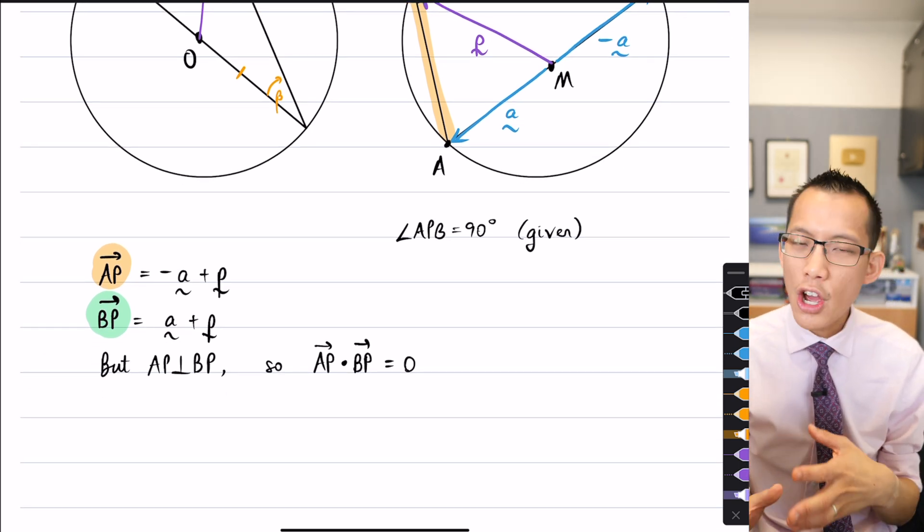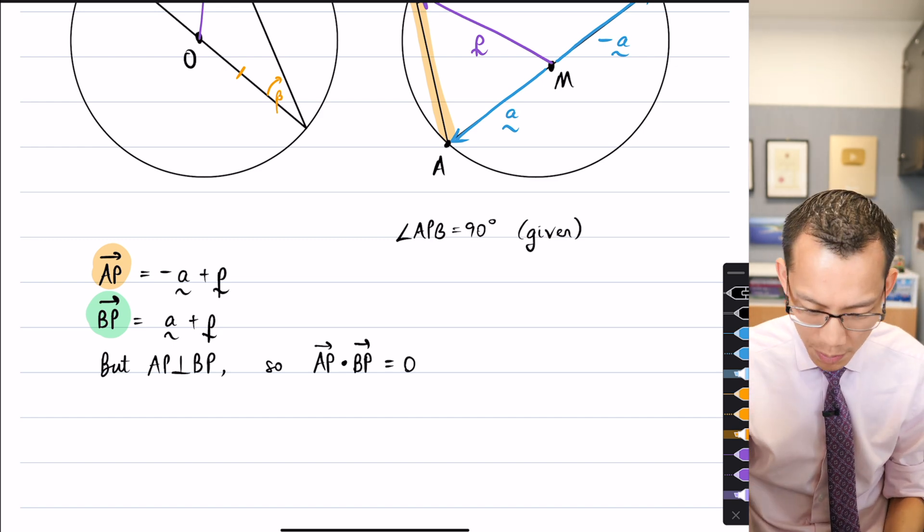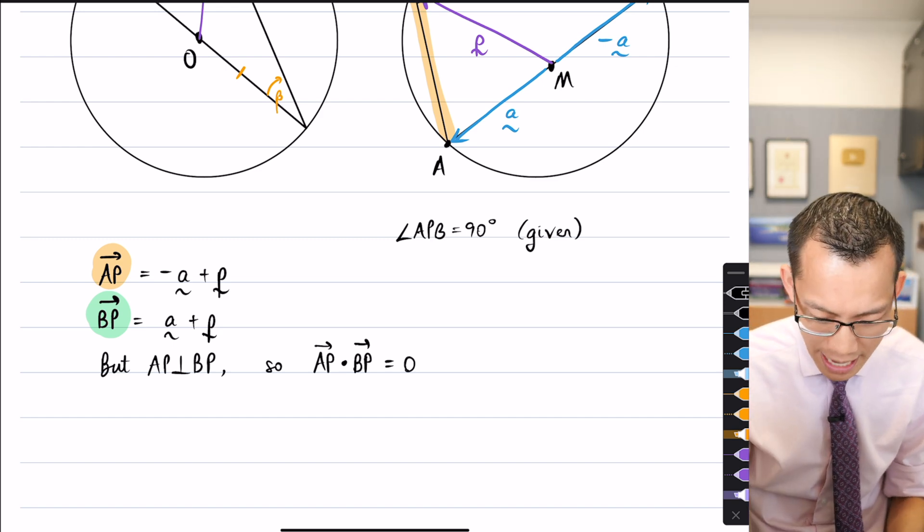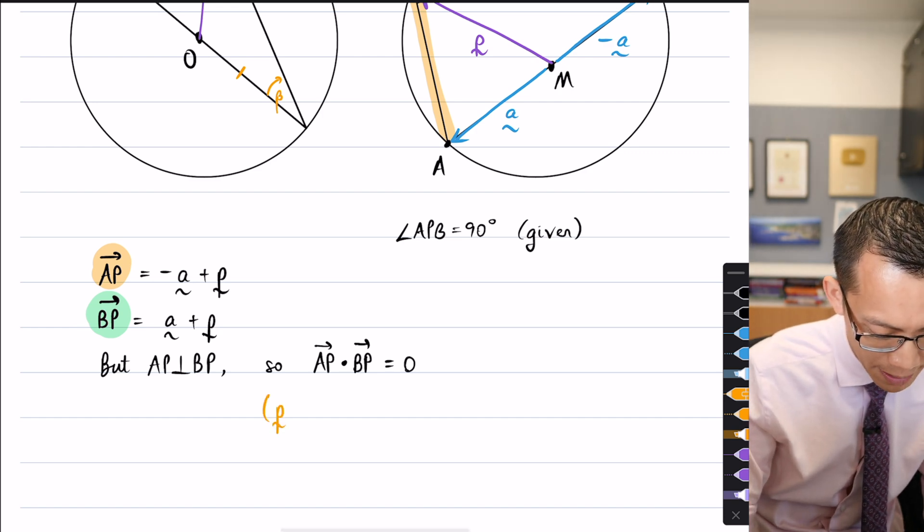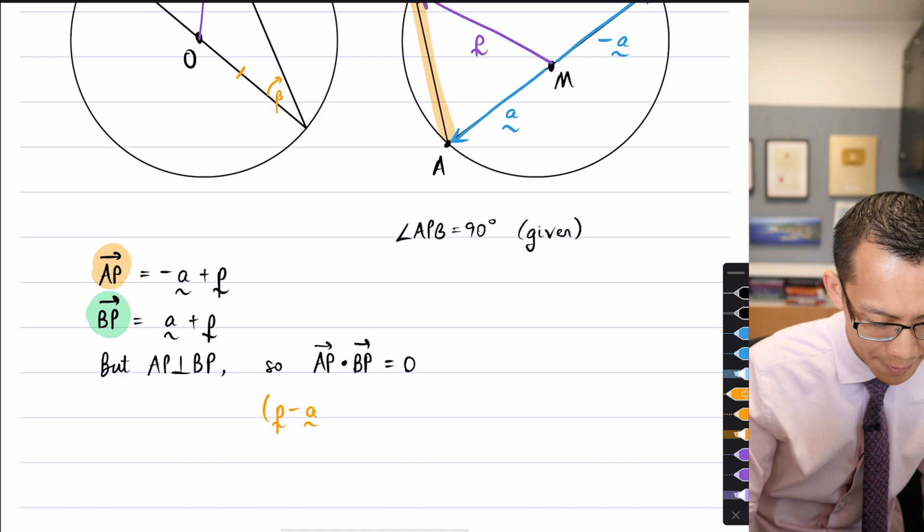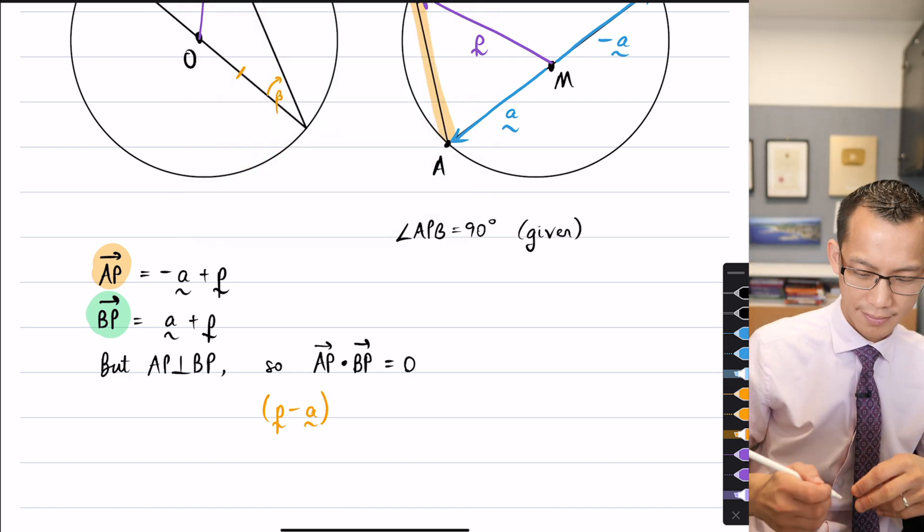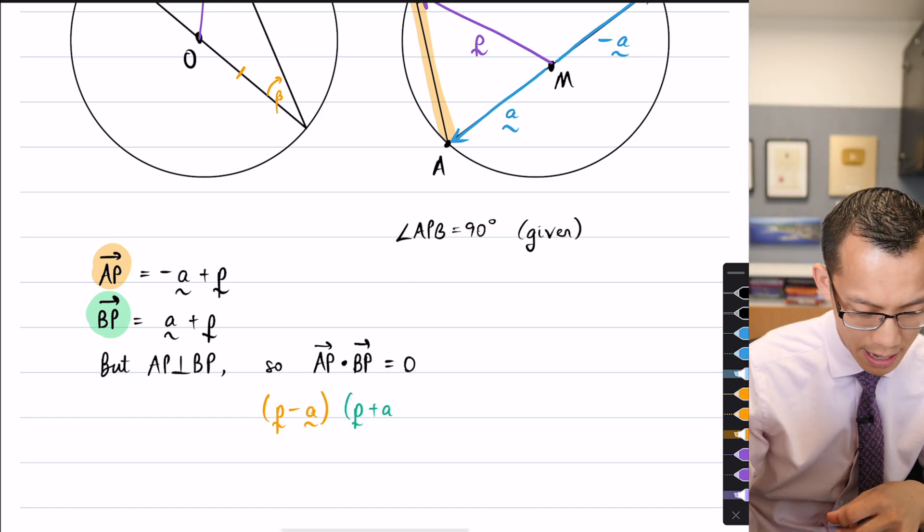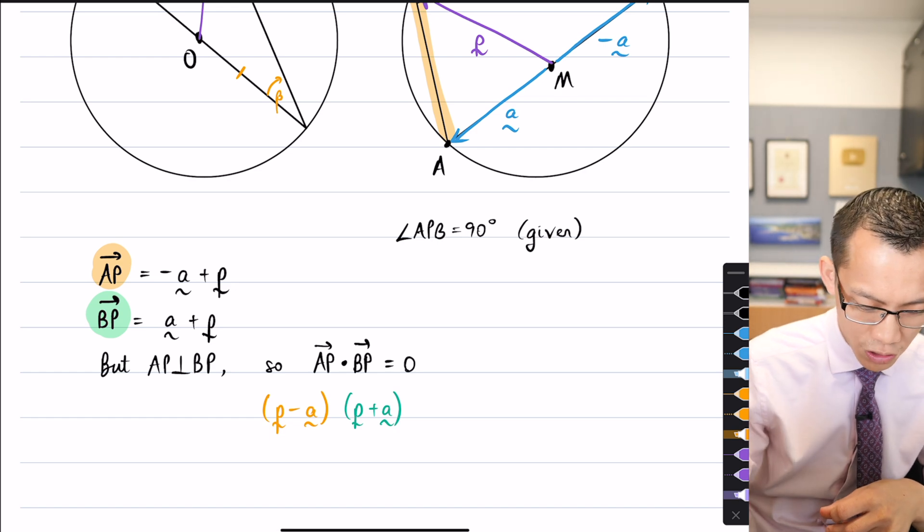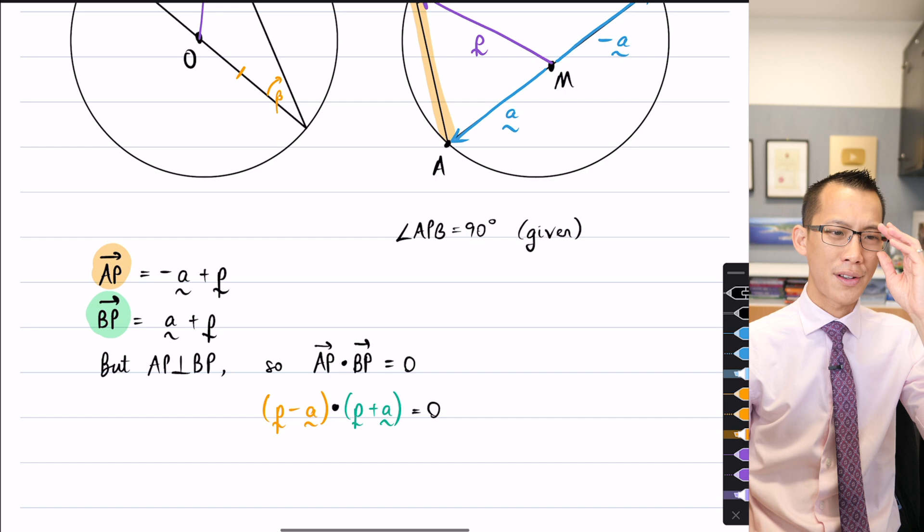Now here's the thing. I actually know what AP and BP are. We just stated them up above. So what I'm going to do is I'm going to write, what's AP? It's P take away A. Do you agree with that? And then what was the BP vector again? P plus A. Very good. So I've got those. When you do the dot product between them, you get zero.